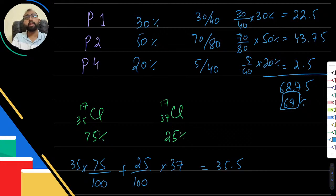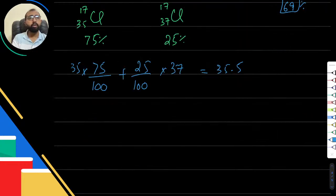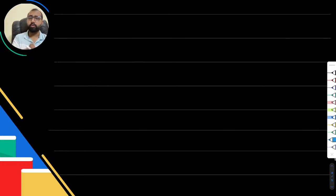And 35.5 is your relative atomic mass — the average mass of all natural isotopes compared with one twelfth of carbon-12. So now I'm going to give you an example and I want you to solve it.